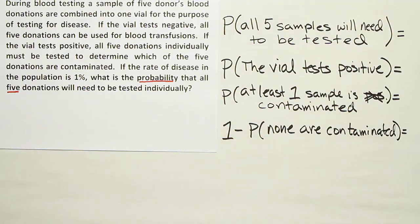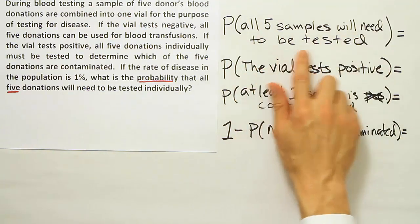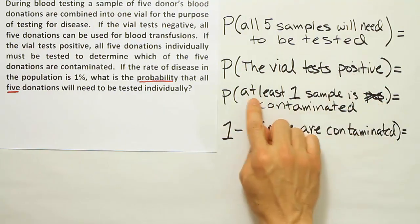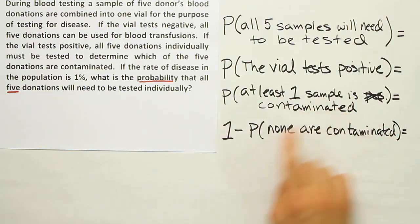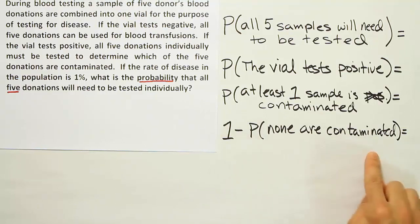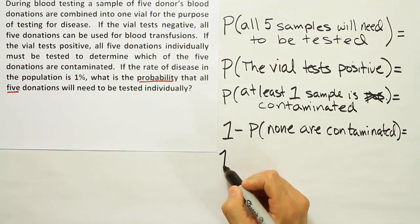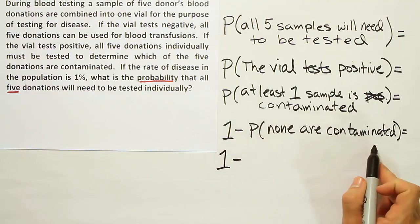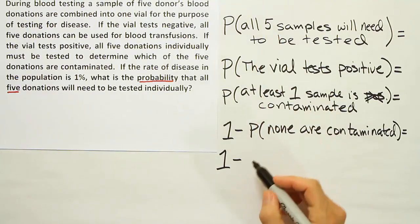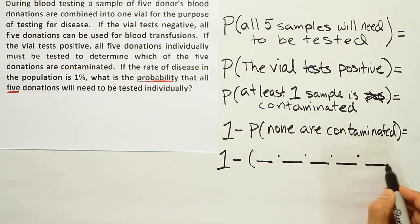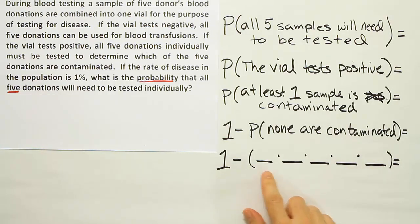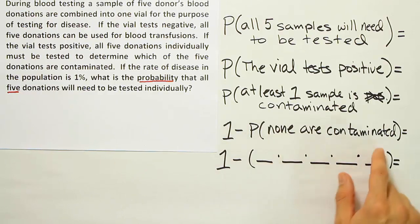In order for all five samples to be tested, the vial must test positive, which means at least one sample is contaminated. And if it's at least one, we solve it as 1 minus the probability that none are contaminated. That's actually a much easier problem. None being contaminated means they're all doing the same thing — they're all clean. With five samples, I'll use a straight multiplication rule with five spaces to put my probabilities, and fill in the probability that each blood sample is not contaminated.